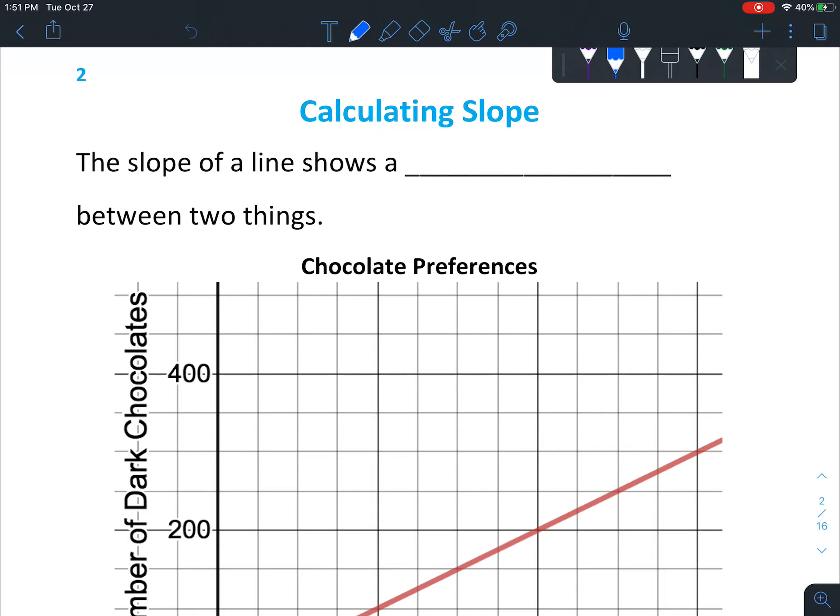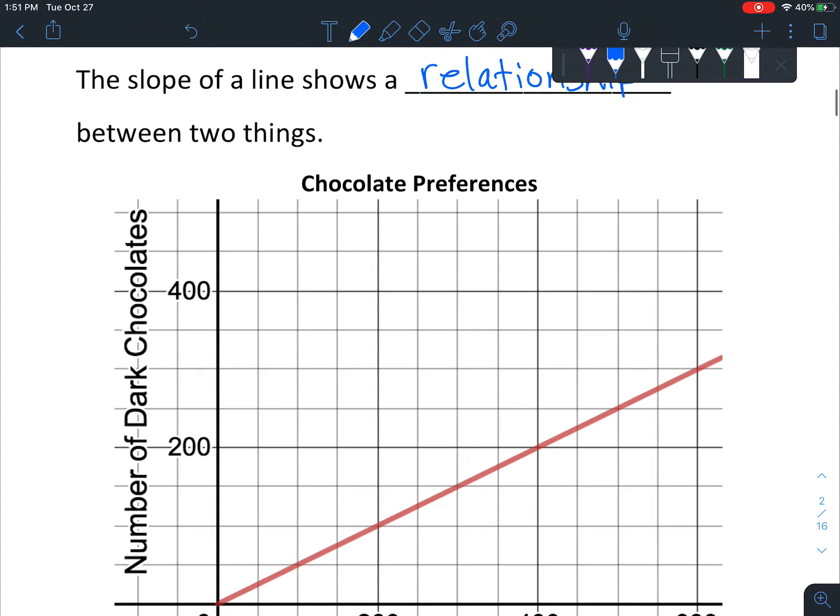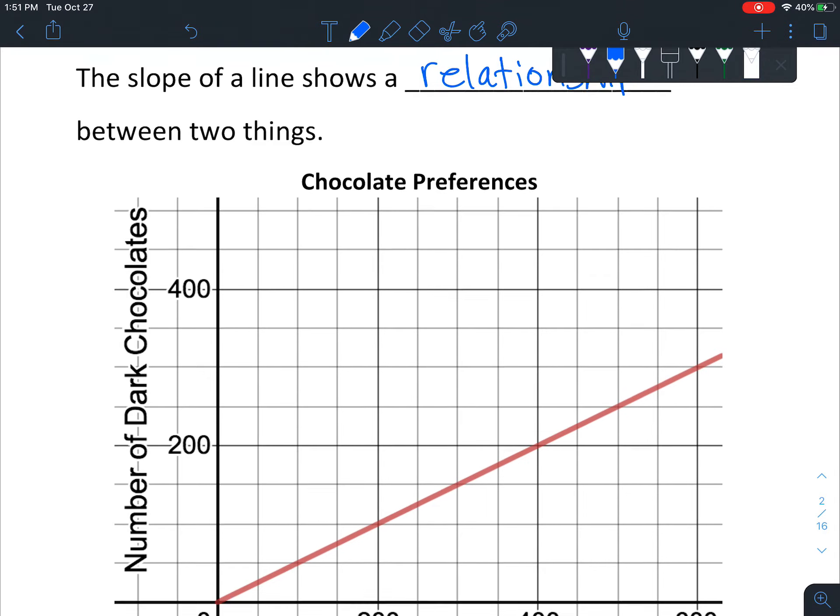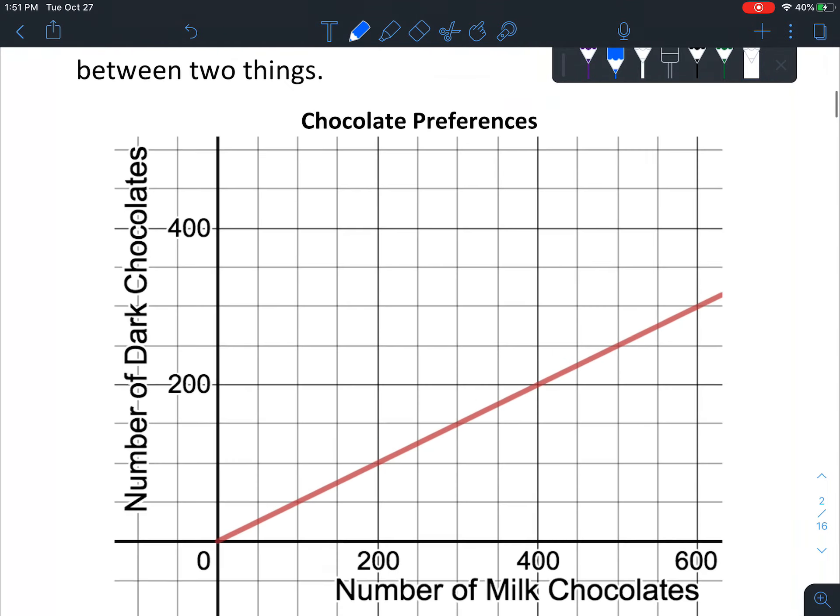So the slope of the line shows a relationship between two things. Basically, whatever's on the x-axis is being compared to whatever's on the y-axis. And the line is a really quick way to show what amounts match up with which amounts.